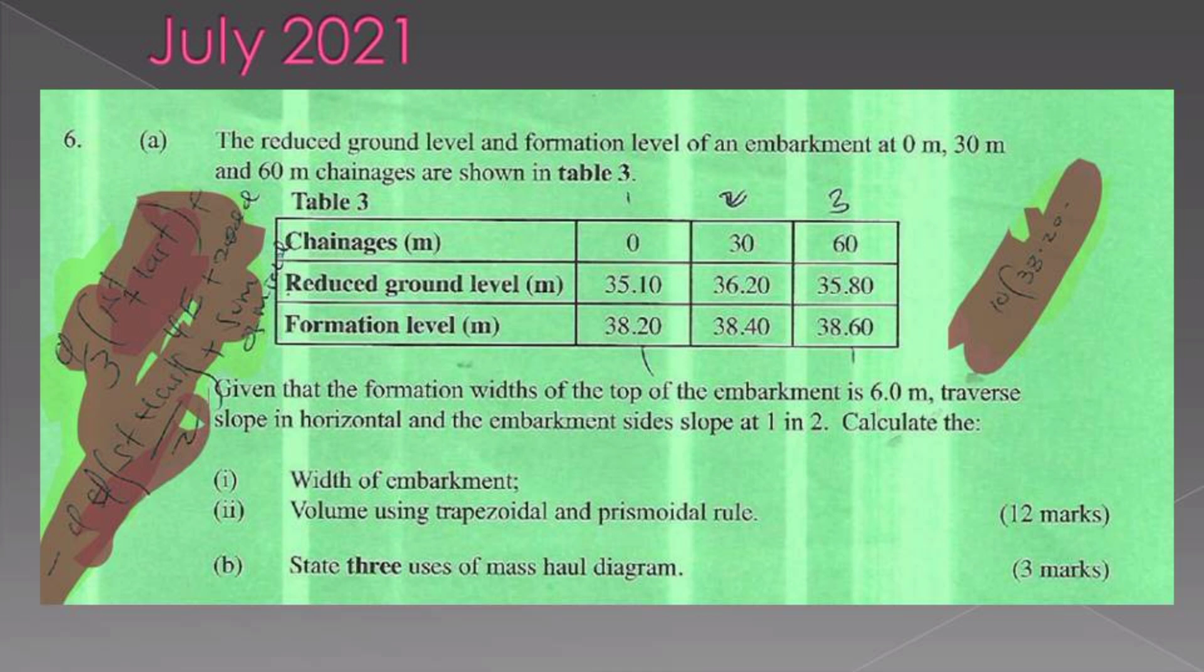You can observe that table with the values there. The chainages have an interval of 30 meters. Given that the formational width of the top of the embankment is 6 meters, traverse slope in horizontal, and the embankment side slope at 1 in 2.